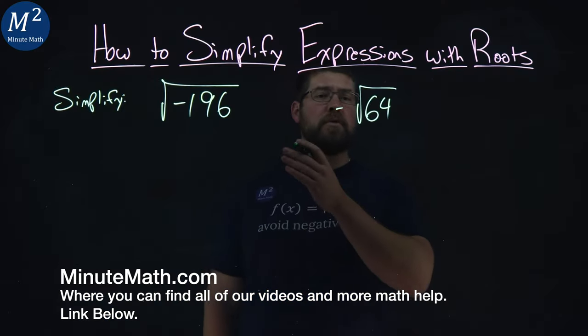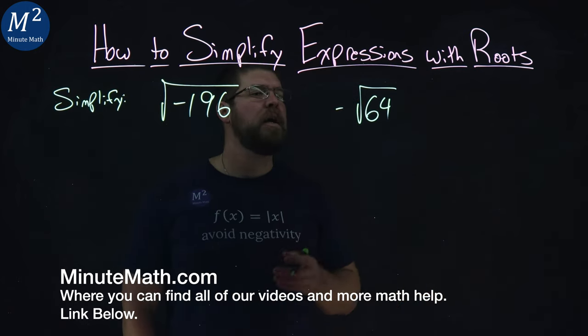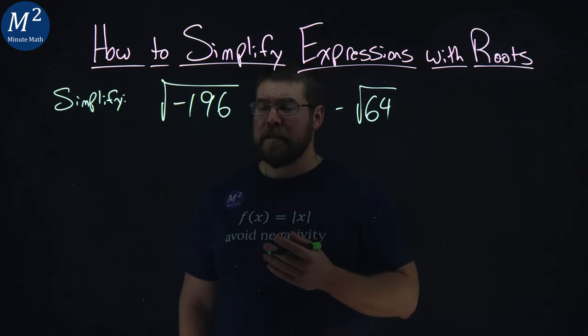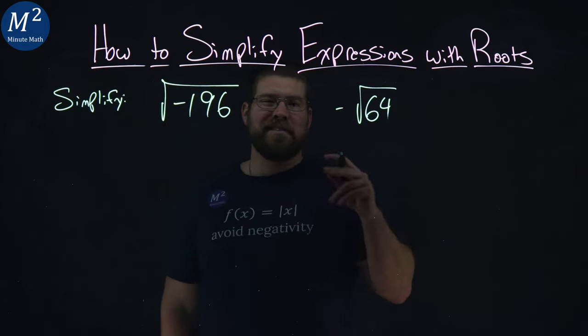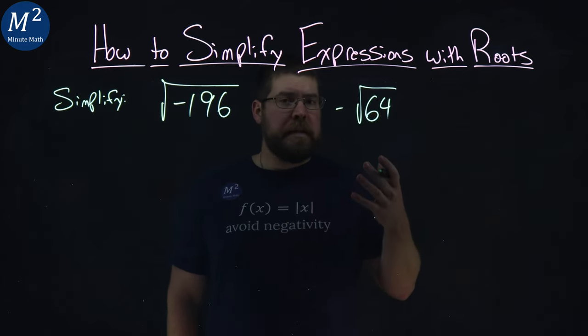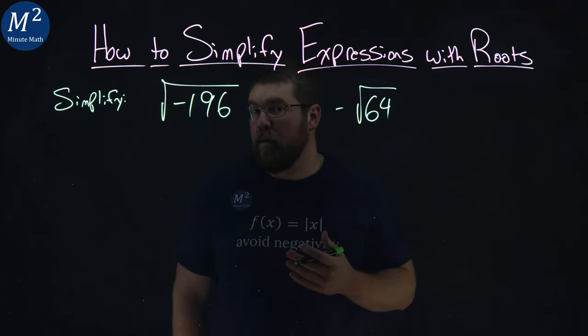We're given two problems here to simplify: square root of negative 196 and negative square root of 64. As we talked in our last video, the square root is the two root. So we want to ask ourselves, when we look at these, what number squared gives us that number we're asking for?